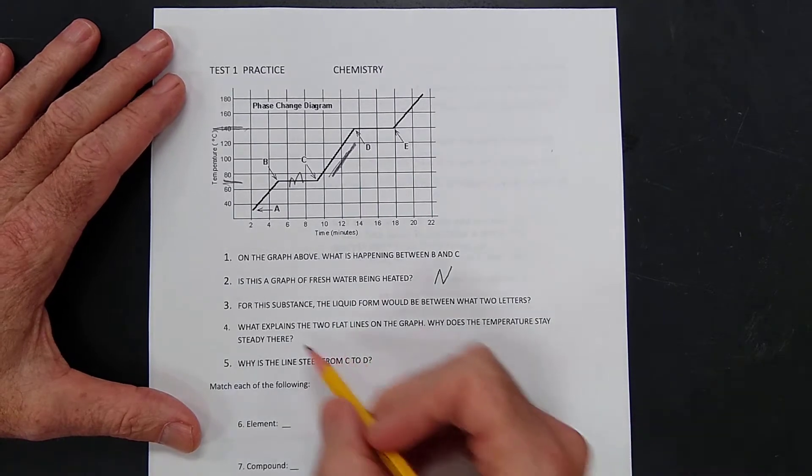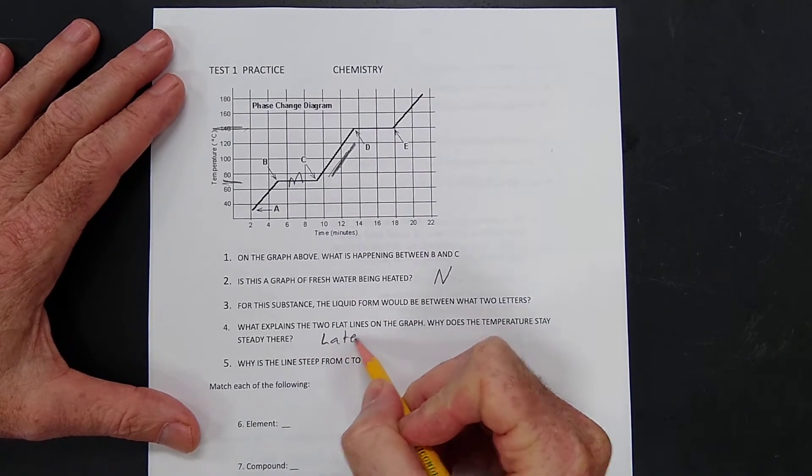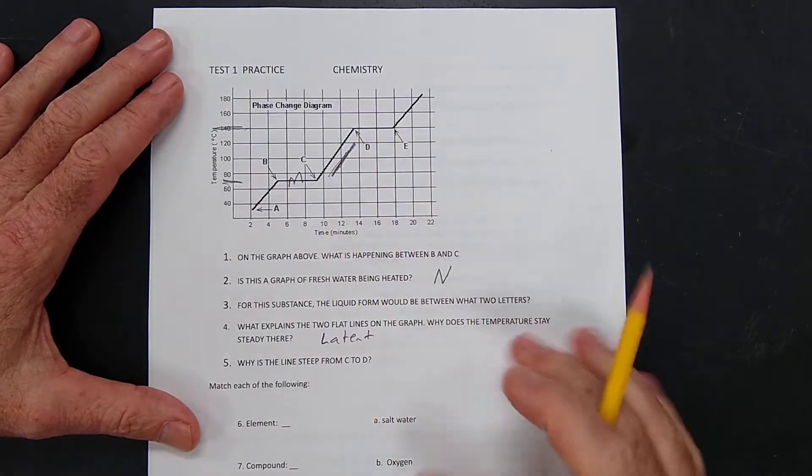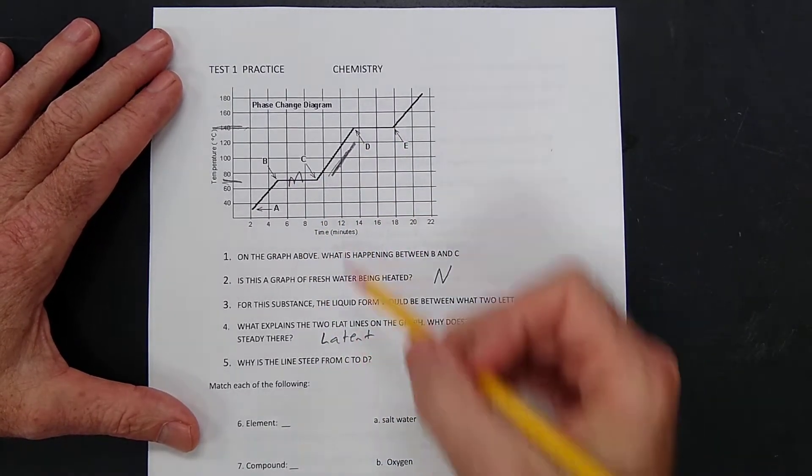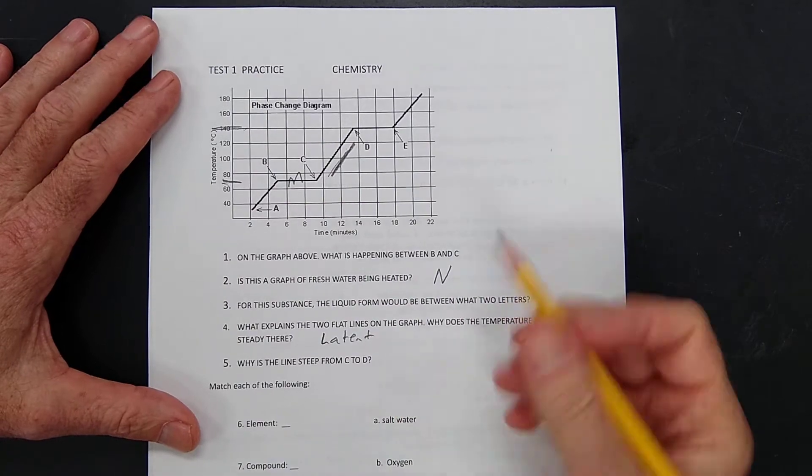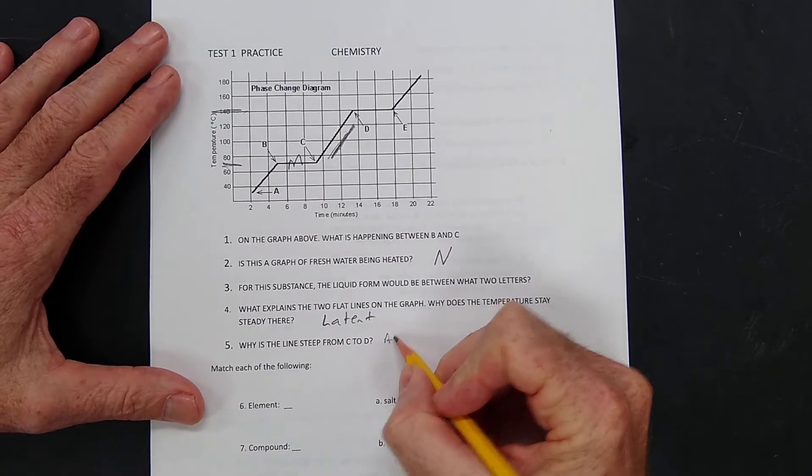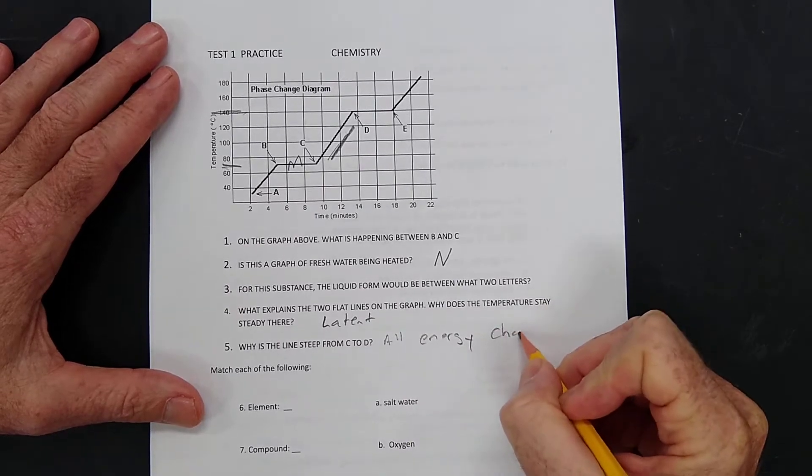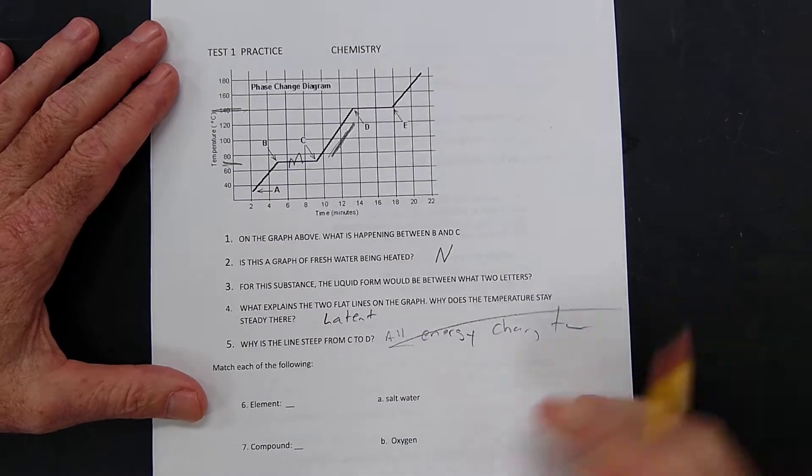What explains the two flat lines? The energy there is latent, or you can say there's melting and boiling. Now, why is the line steep right here? Because there's no melting or boiling. Basically, all the energy is going in to change the temperature. Okay, pretend I wrote that.